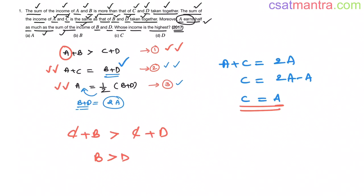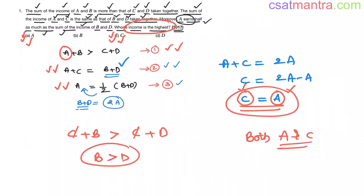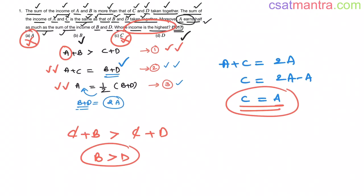Now we want to find the highest income. A's income equals C's income, so neither can be individually the highest — they'd need to appear as a combined option. We can eliminate options showing A or C alone. Among B and D, B is greater than D. So our answer is B, which has the highest income.